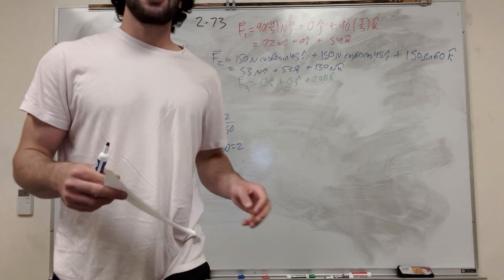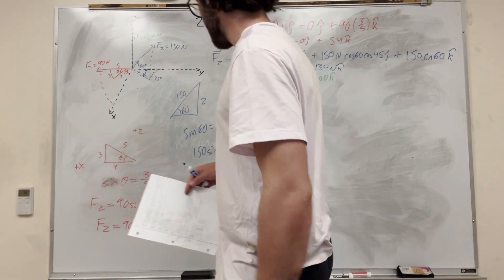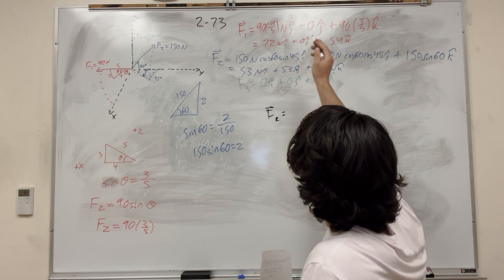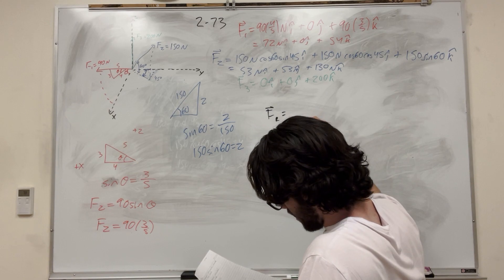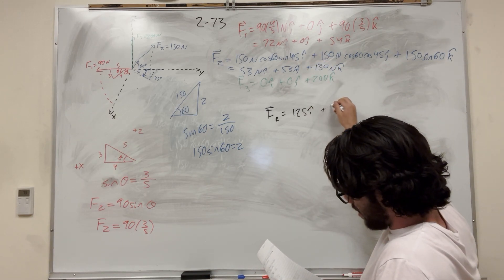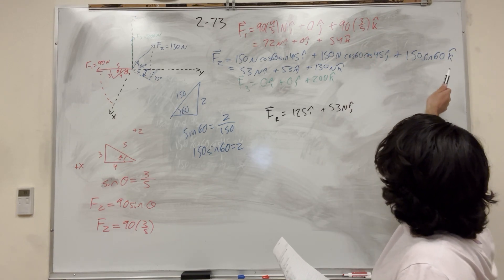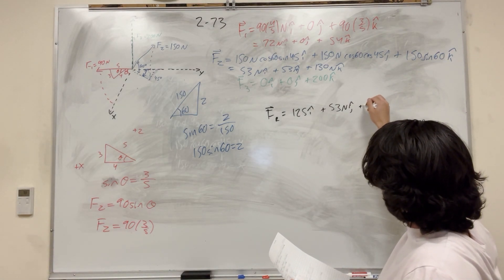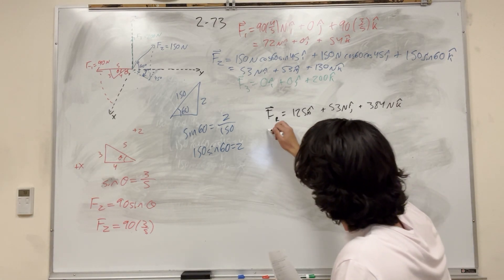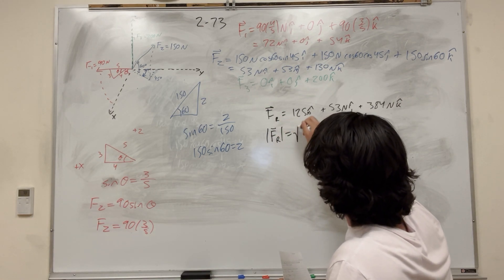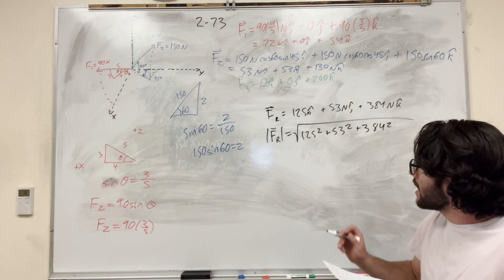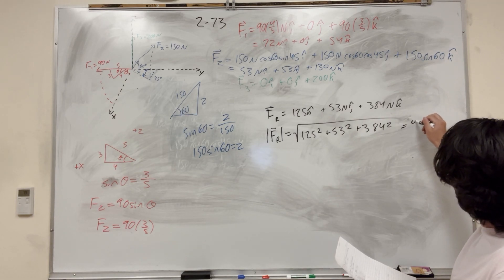So that's Part A. Now we want to determine the magnitude and coordinate direction angles of the resultant force. The resultant force is what happens when you add them all together. So: 72 + 53 + 0 = 125 Newtons in x; 0 + 53 + 0 = 53 Newtons in y; and 54 + 130 + 200 = 384 Newtons in z. The magnitude of the resultant is √(125² + 53² + 384²) = 407 Newtons.